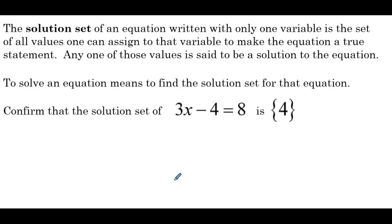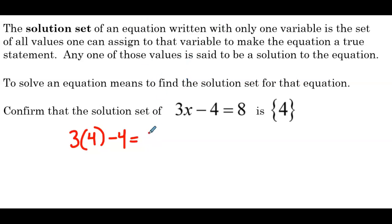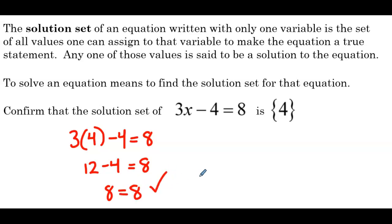They've given us an example: confirm that the solution set of 3x minus 4 equals 8 is 4. They solved it, figured out the answer is 4, and want us to confirm. We replace x with 4 — in parentheses, just in case there's a positive or negative. So we have 3 times 4, which is 12, minus 4 equals 8, giving us 8 equals 8. We get a true statement, so x equals 4 is a correct solution.